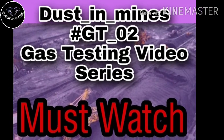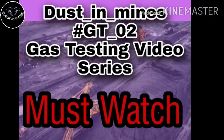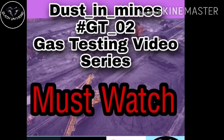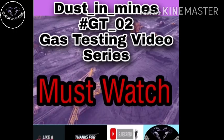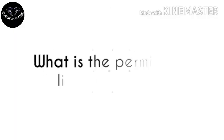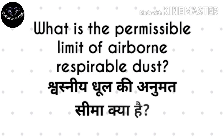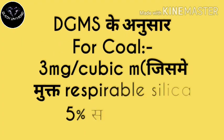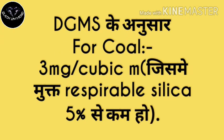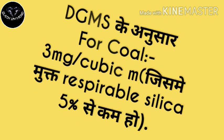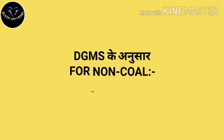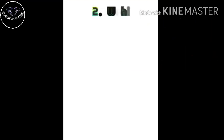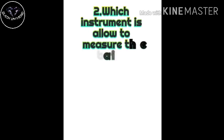आज हम लोग डिस्कस करने वाले हैं गेस्ट टेस्टिंग से रिलेटेड टॉपिक — डस्ट इन माइन्स। डेस्ट टेस्टिंग वीडियो सीरीज स्टार्ट किया है। DGMS के अनुसार अगर कोल सीम है, कोल फेस है, तो 3 mg per cubic meter — जिसमें सिलिका का respirable percentage 5% से कम हो। और अगर वो फेस नॉन-कोल है, तो 15 बाई सिलिका का परसेंट से अधिक नहीं होना चाहिए।